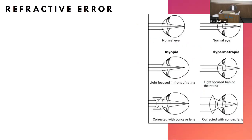In myopia, short-sightedness, the eyeball is too long so that the focus ends up in front of the retina, or the front part of the eye is too curved so refractive power is too high and it bends the light too much. Hypermetropia is the opposite - long-sighted - so you can see well in the distance but not up close. Myopes can't see well in the distance but can see well up close. Myopia overall is more common in the community, especially now with screen use - there's like an epidemic of myopia developing in children.